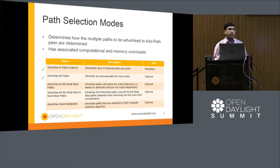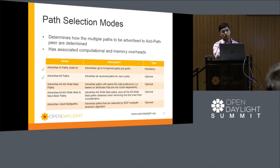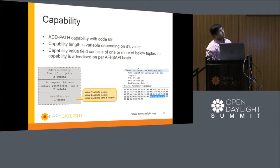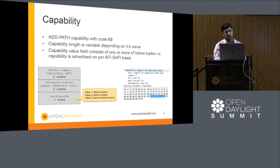There are different path selection modes for configuring additional paths. The path selection mode specifies how many paths the BGP speaker will advertise. Various strategies are specified in the draft: advertise all paths, advertise N paths, and so on. Of the five strategies covered by the draft, the first two — add-N and add-all — are currently supported by the OpenDaylight code. The ADPATH capability defines a new capability type with value 69, exchanged during the initial BGP handshake. A speaker can advertise the capability to receive, send, or both send and receive additional paths, on a per address family basis.